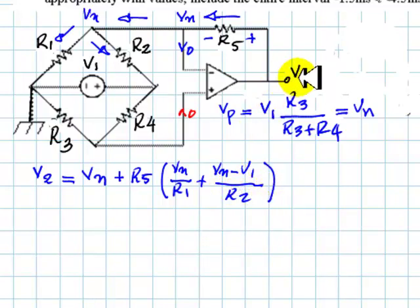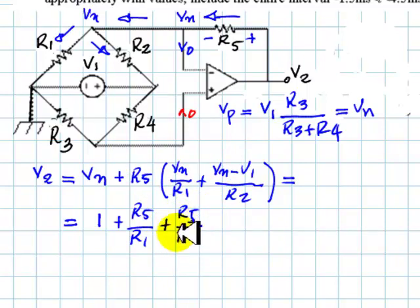And that is the output voltage. We can factor out Vn. Let's do that. There is a 1 here, plus R5 over R1, and then this is R5 over R2, V1. And here is Vn, but Vn is already given by this term.